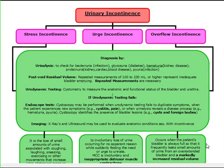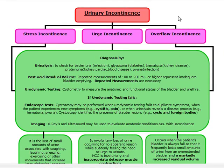Our next topic is urinary incontinence. The three most commonly tested on the exam are stress incontinence, urge incontinence, and overflow incontinence. These have different mechanisms, so we're going to go over the different ways to diagnose and distinguish between them. Incontinence can happen secondary to autonomic problems such as diabetic nephropathy, or neurological problems such as stroke, multiple sclerosis, Parkinson's, and Alzheimer's disease.